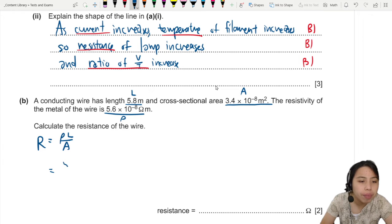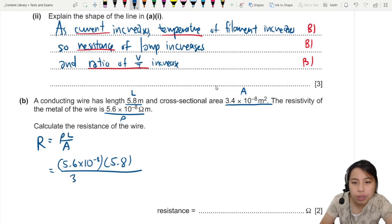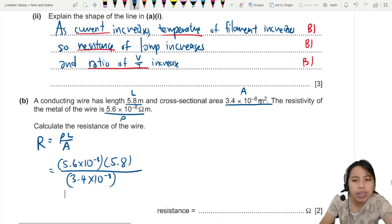Resistivity 5.6 times 10 negative 8. L is 5.8. Area is 3.4 times 10 negative 8. Everybody is in SI units, right? Just double check. Meters, meters, meters. It's good. Very good.